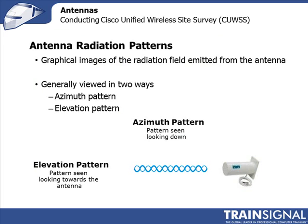A radiation pattern is literally just a picture of how those signals are radiating out from that antenna. When you look at the antenna specs, you'll see different terms being used. The azimuth pattern is the pattern that you would see if you look down onto the antenna. The elevation pattern is what you see if you're looking towards the antenna. The azimuth pattern is really the primary one you look at, because that's the one giving you your coverage — showing you that beam, in this case the Yagi antenna beam that goes down the aisles of a warehouse.